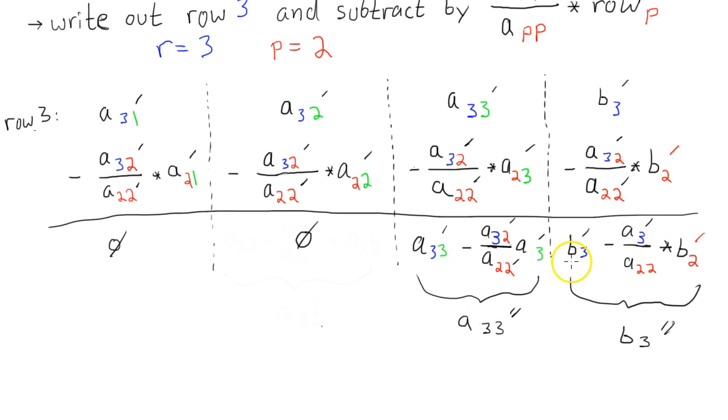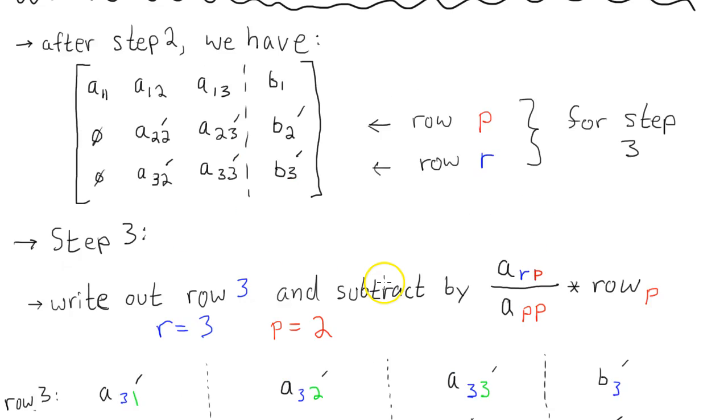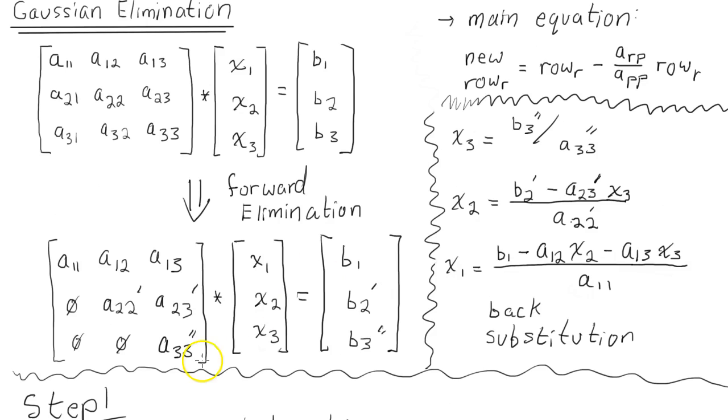Well, one step away from your answer. So you have all of your coefficients. And you come back all the way up here to this equation. And you've completely finished the forward elimination. And then you can start back substituting. So x3 right here. All you have to do is move a 3, 3 to the other side. So x3 is equal to b 3 double prime, or modify twice, divided by a 3, 3 double prime.